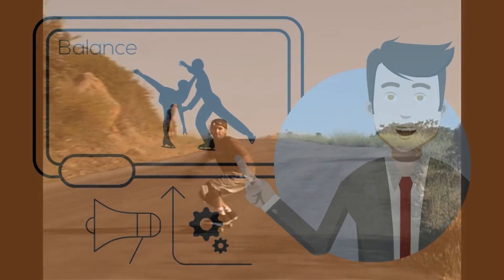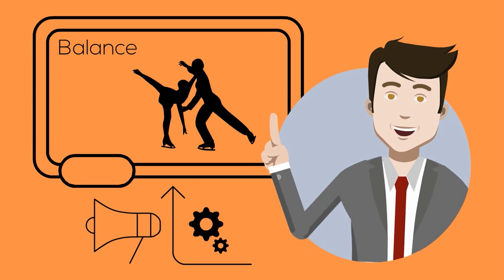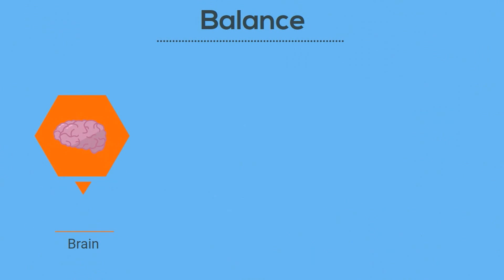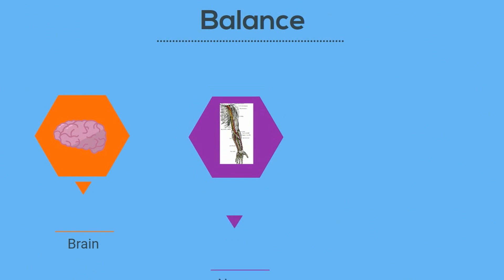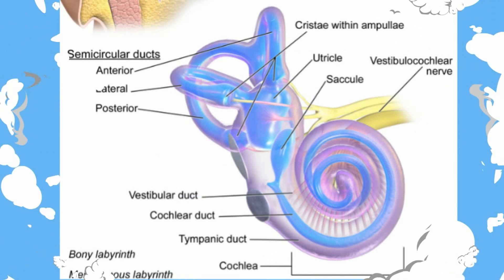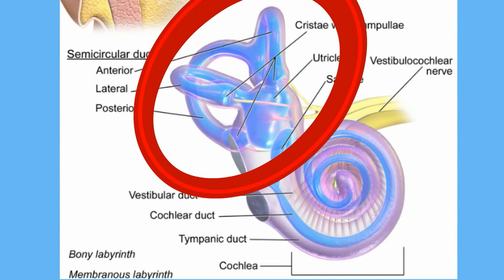Have you ever wondered where your sense of balance originates? It is a combination of your brain, nervous system, and your inner ear. Inside the inner ear are the semicircular canals, which are structures in the ear that are responsible for your sense of balance.